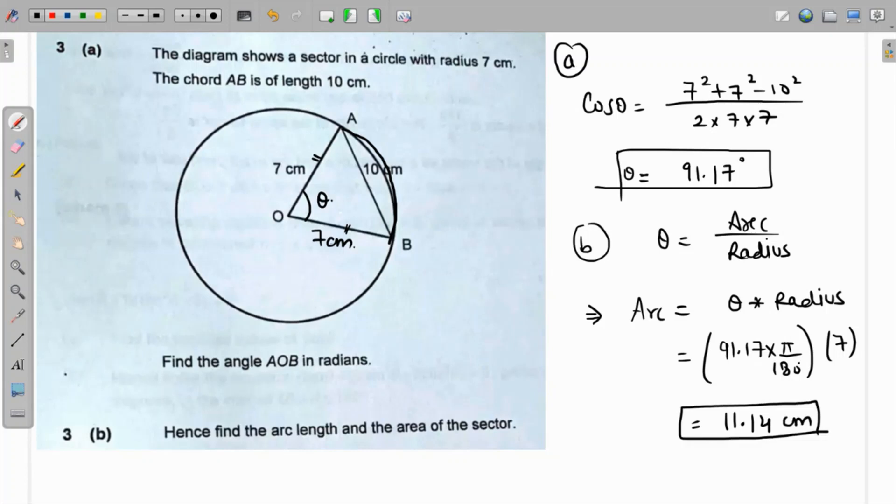For the area of the sector we know that the area is dependent on the central angle. The area of the sector is πr² over 360.